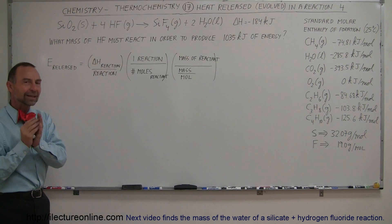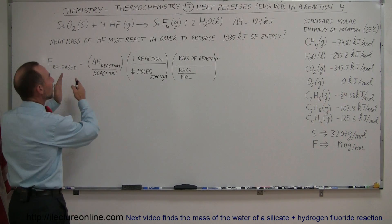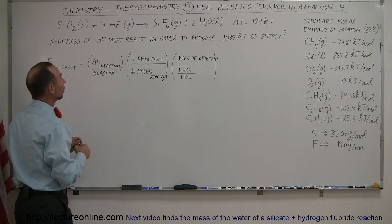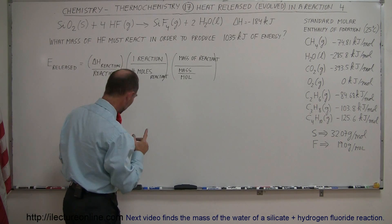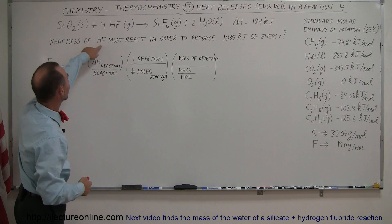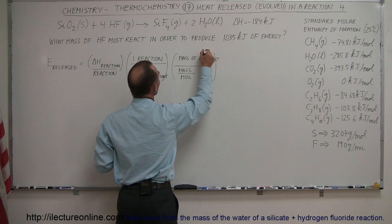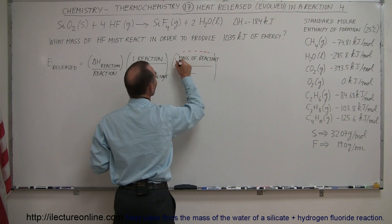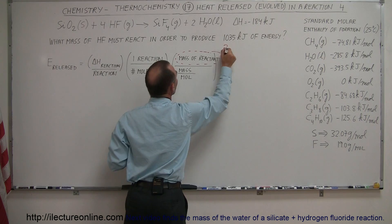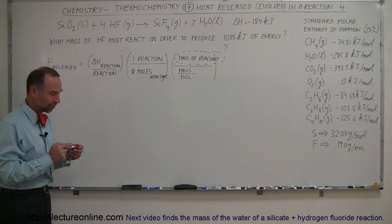The thing is, you do it exactly the same way we did the previous problem — you use the exact same equation. In this case, we're looking for what mass of hydrogen fluoride we need, using a different color to highlight it. We're looking for the mass of the reactant. It's just a different portion of the equation.